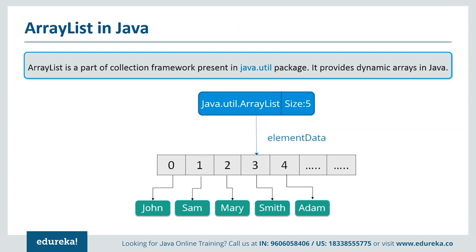Some key points to note: ArrayList is initialized by a size; however, the size can increase if the collection grows or shrink if objects are removed from the collection. ArrayList also allows us to randomly access the list. ArrayList cannot be used for primitive types like int or char — for those cases, we need a wrapper class.